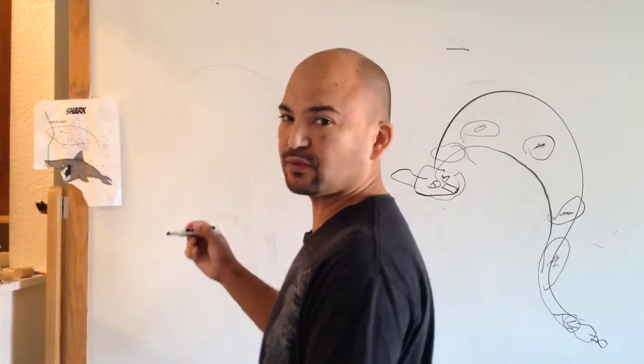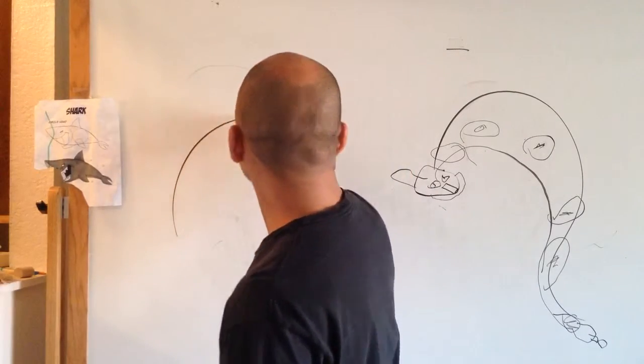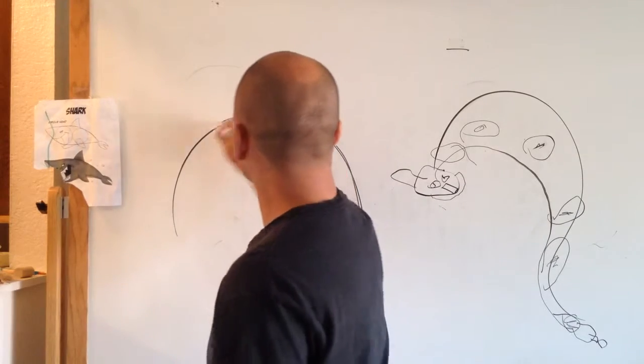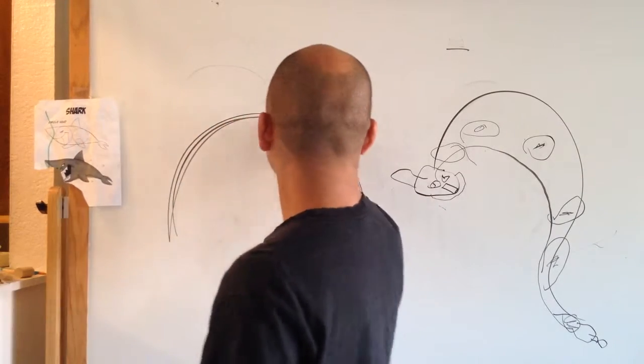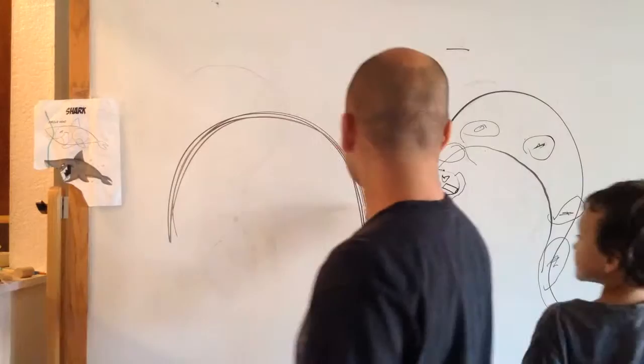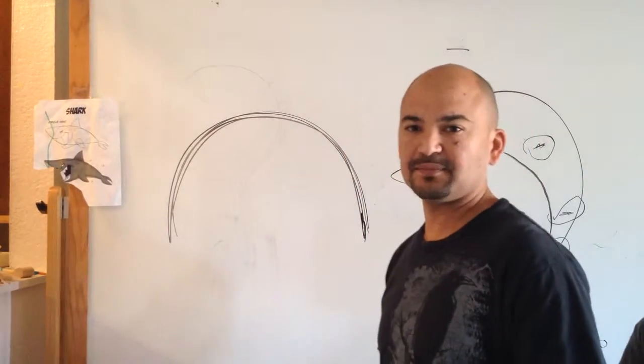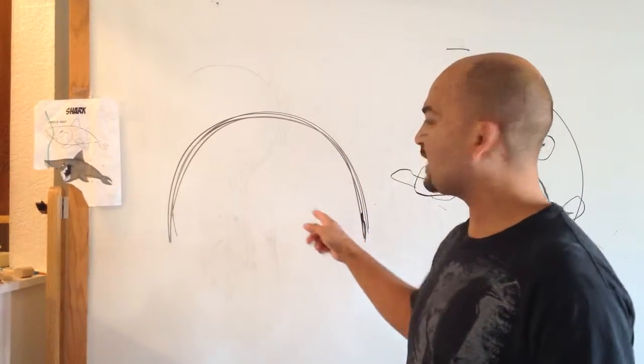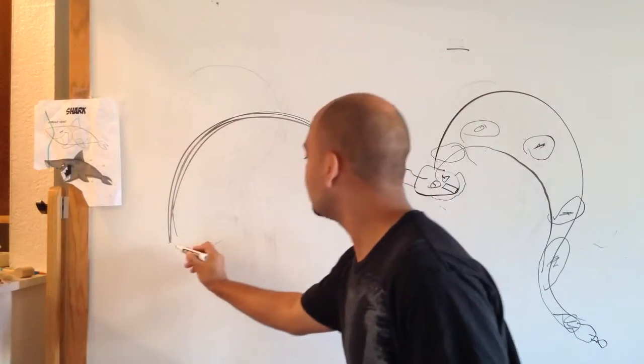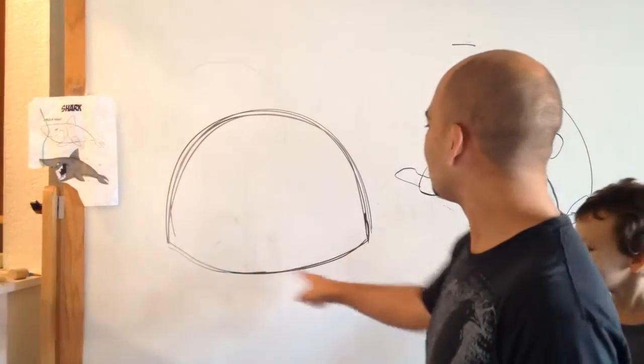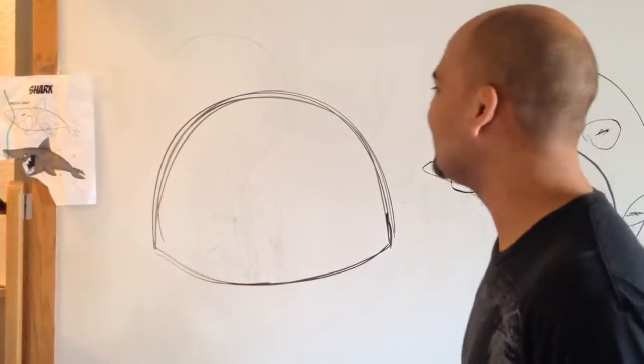So the first thing we're going to do is we're going to draw a big rainbow. How's that look? Good rainbow. Nice big rainbow. And then once you have that nice big rainbow underneath, you're going to draw a nice curved smiley face underneath it.